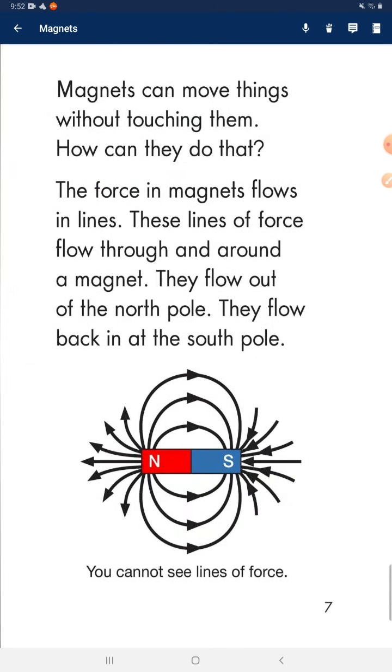Magnets can move things without touching them. How can they do that? The force in magnets flows in lines. These lines of force flow through and around the magnet. They flow out of the north pole. They flow back in at the south pole.